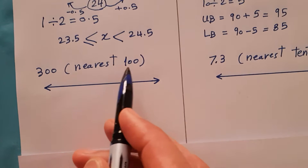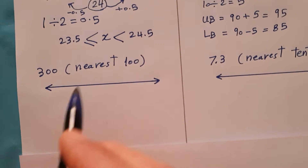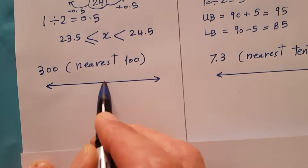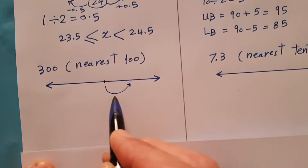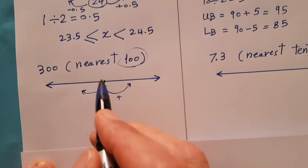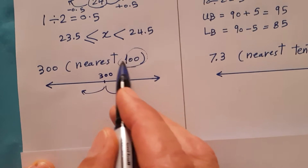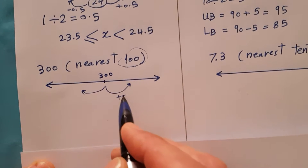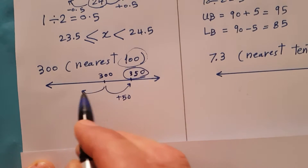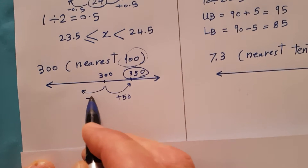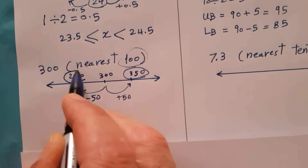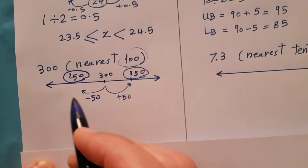300 to the nearest hundred — the same way. 300 is the middle number. Half of 100 is 50. Just add 50 to get 350 as the upper bound, and subtract 50 to get 250 as the lower bound. Very easy.